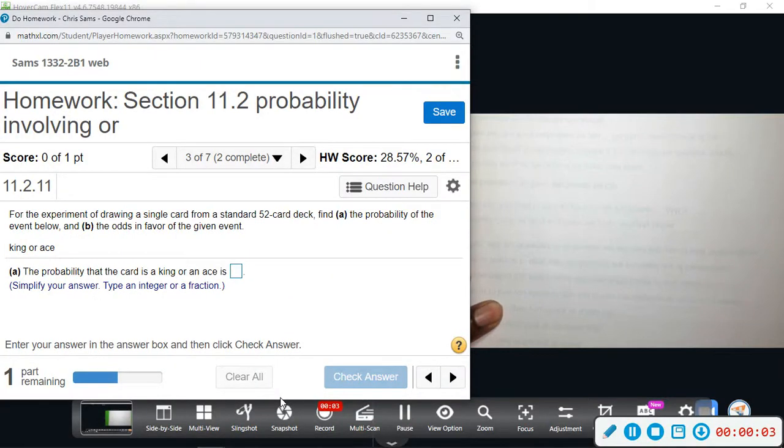Alright, number three. For the experiment of drawing a single card from a standard 52-card deck, we're going to do two parts. Part A: find the probability of the event below, and Part B: the odds in favor of the given event. So we want to find King or Ace.